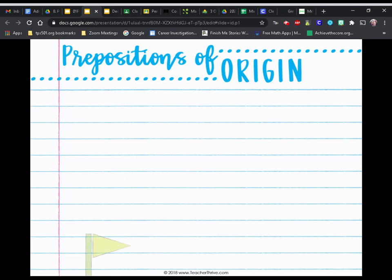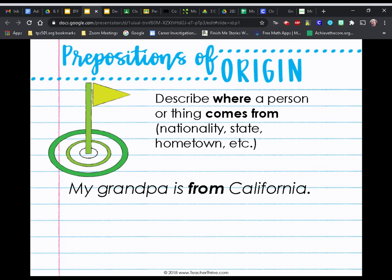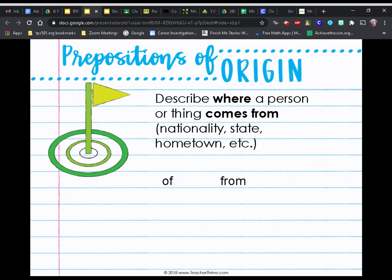And finally, we have prepositions of origin. They describe where a person or thing comes from — their nationality, state, or hometown. For example: my grandpa is from California — 'from' tells me where grandpa is originally from. The president of Mexico will visit us — 'of' tells me the origin of the president. Of and from are the only two prepositions for this category.